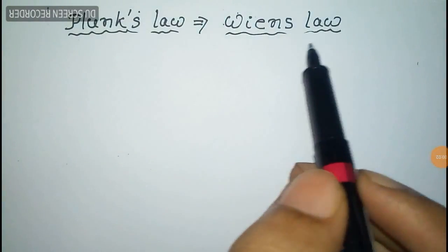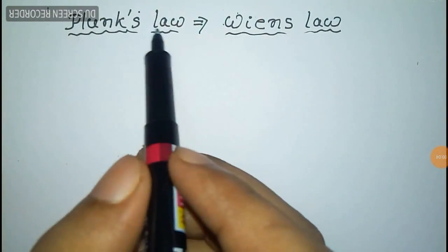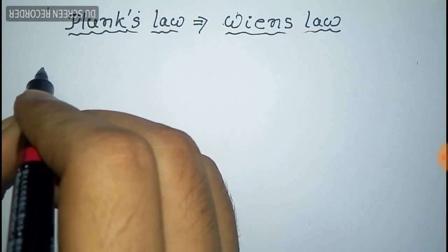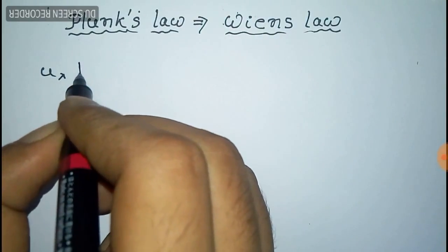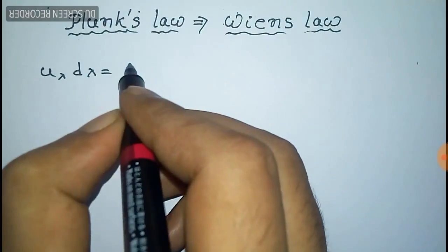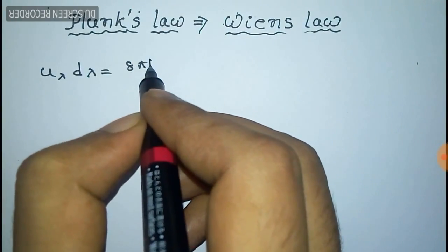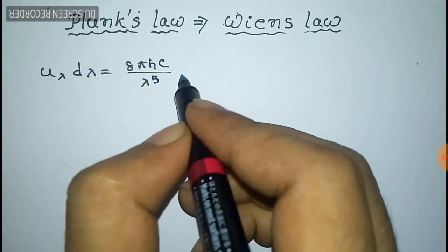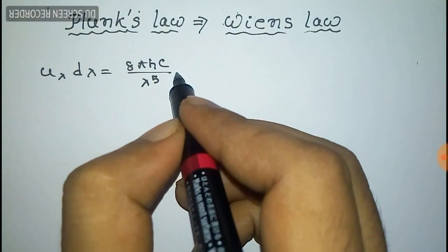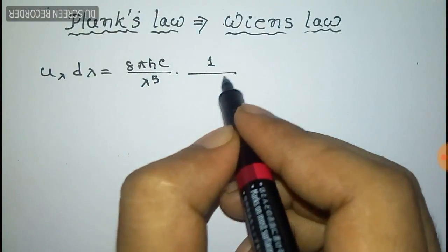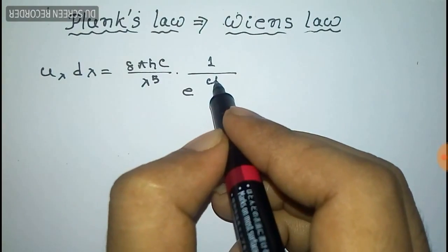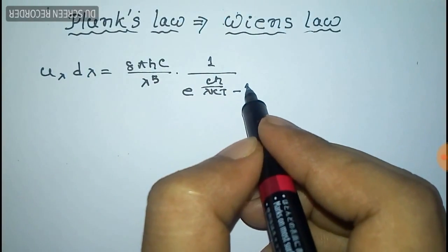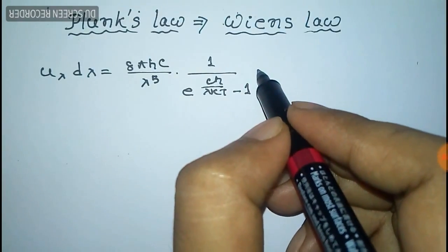We have to prove Wien's law from Planck's law. For this we shall take Planck's law first, that is u(λ)dλ equal to 8πhc divided by λ to the power 5, into 1 by e to the power hc/λkT minus 1, times dλ.